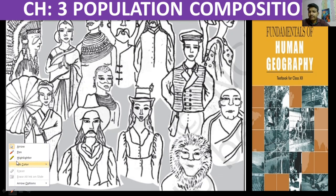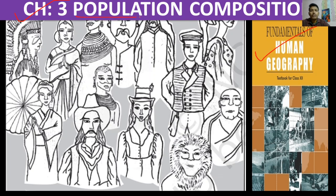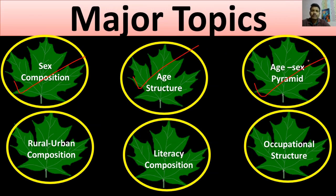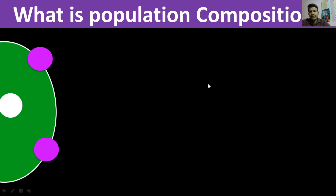Hello, dear students. Today we are going to start our third chapter of Fundamentals of Human Geography, that is Population Composition. We have already covered two chapters: first, Human Geography Nature and Scope, and second, World Population Distribution, Density and Growth. The major topics we will cover in this chapter are: sex composition, age structure, age-sex pyramid, rural-urban composition, literacy composition, and occupational structure.